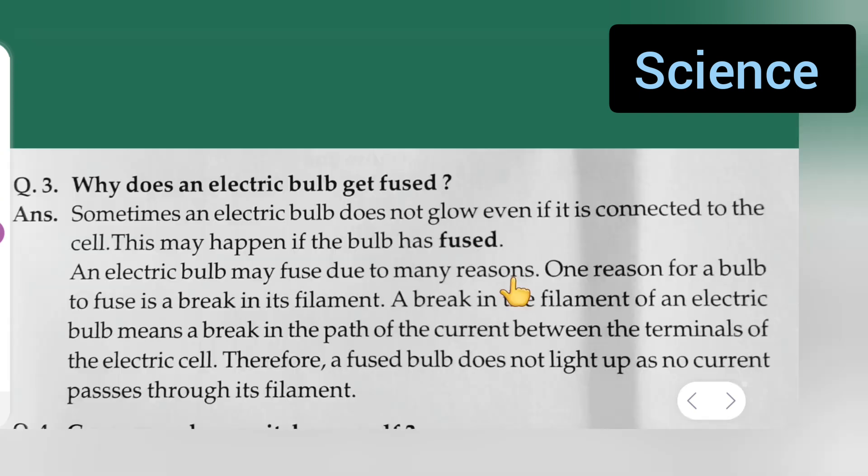I can start writing. These are the only notes from class 6 science. The question: why does an electric bulb get fused? Answer: sometimes an electric bulb does not glow even if it is connected to the cell. This may happen if the bulb has fused. An electric bulb may fuse due to many reasons.